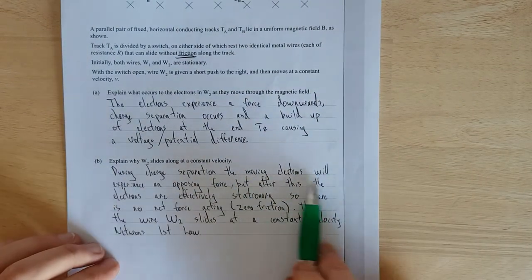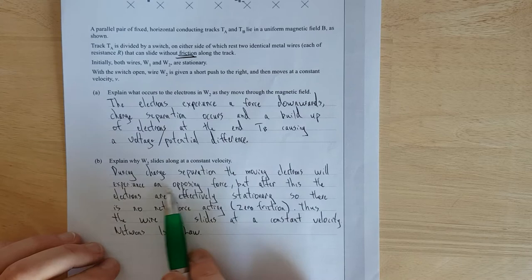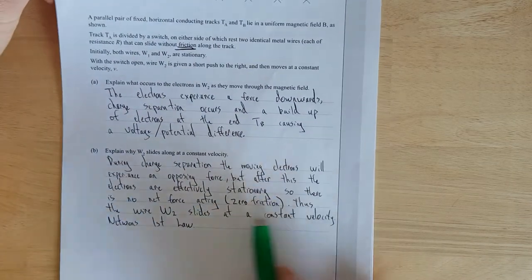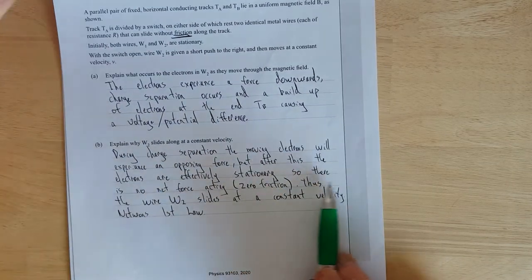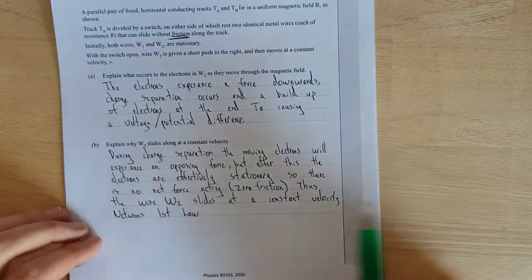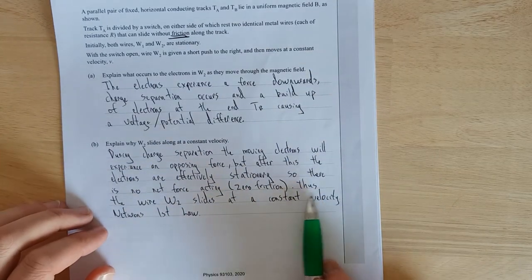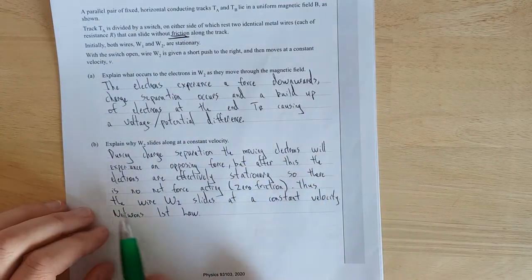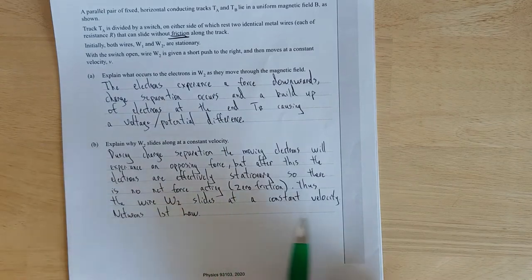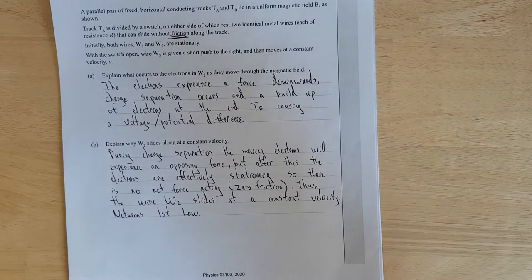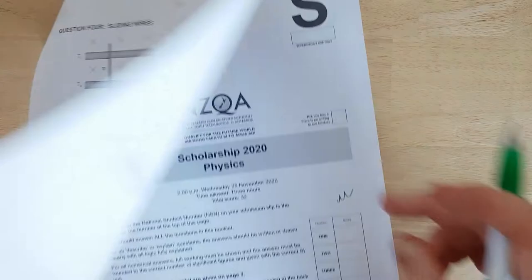Right, so I said, during charge separation, the electrons, the moving electrons will experience an opposing force. But after this, the electrons are effectively stationary, so there is no net force acting. And because there's zero friction, thus the wire W2 slides at a constant velocity. And that's Newton's first law. So yeah, that's really about it for that.